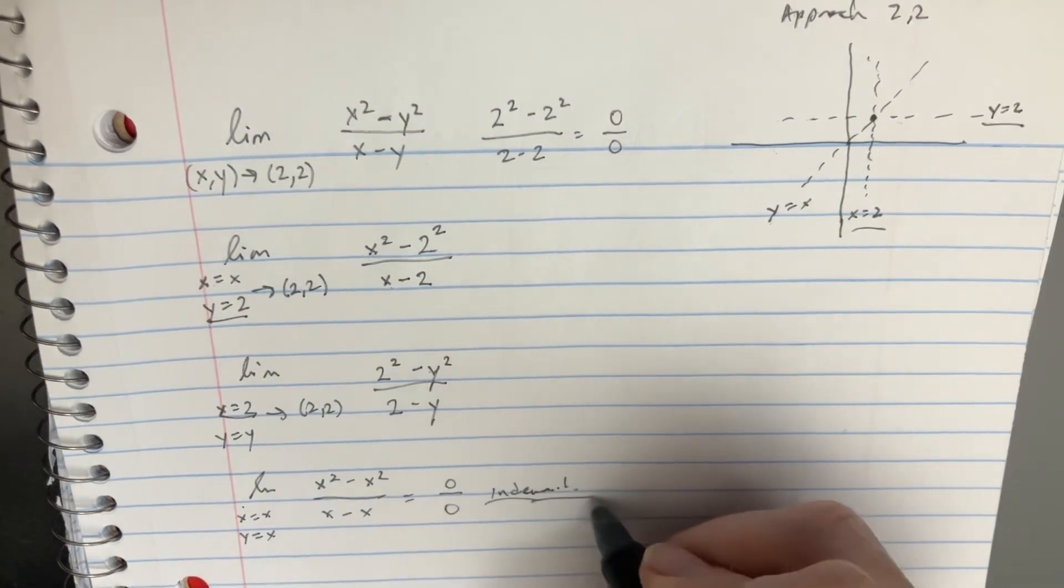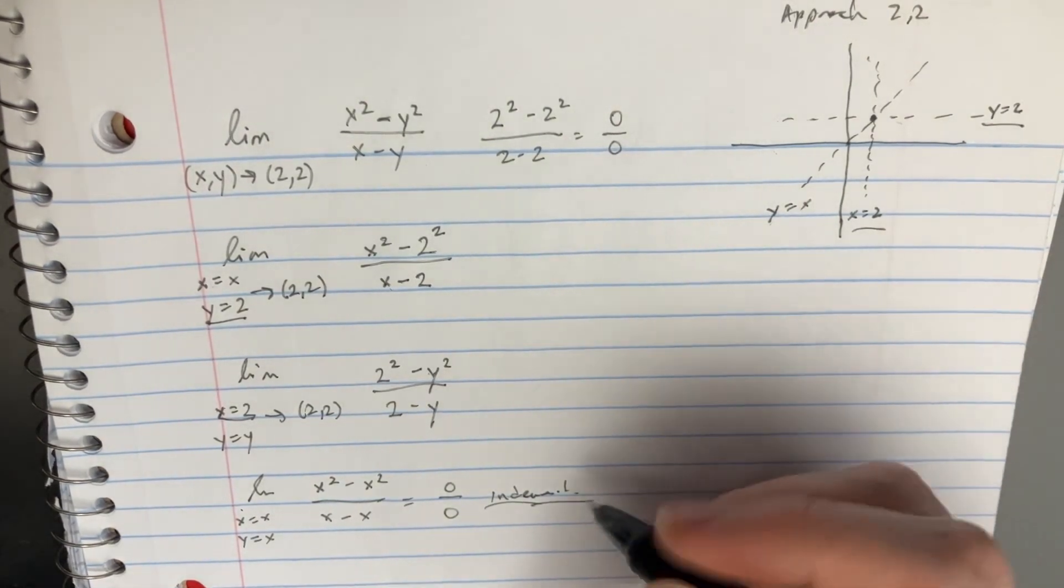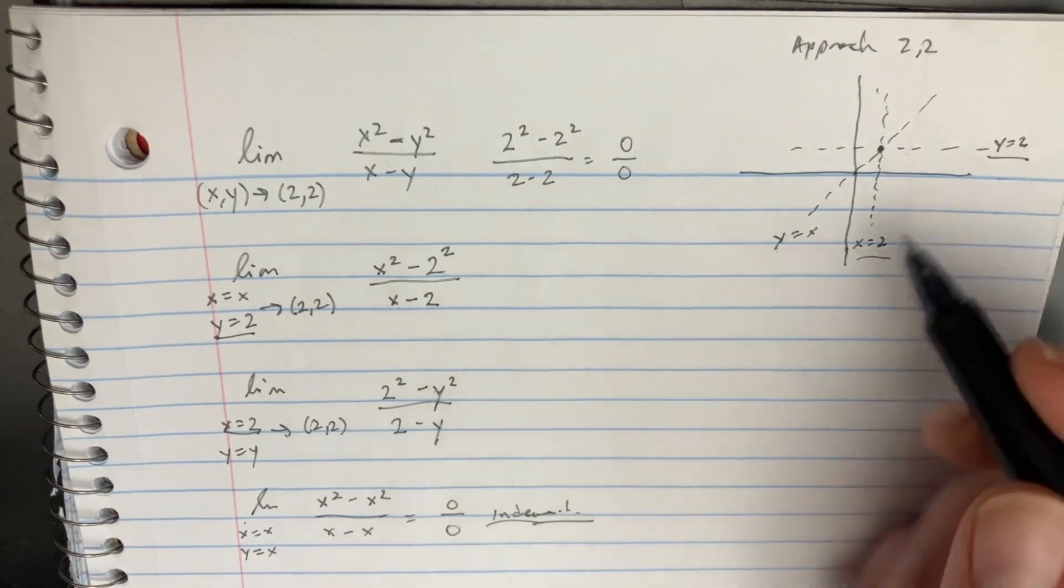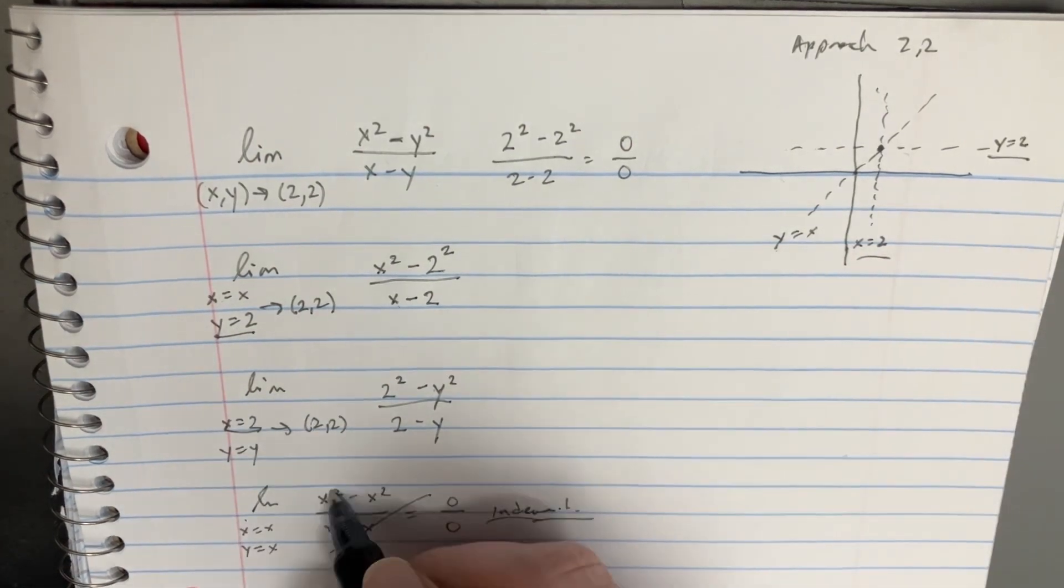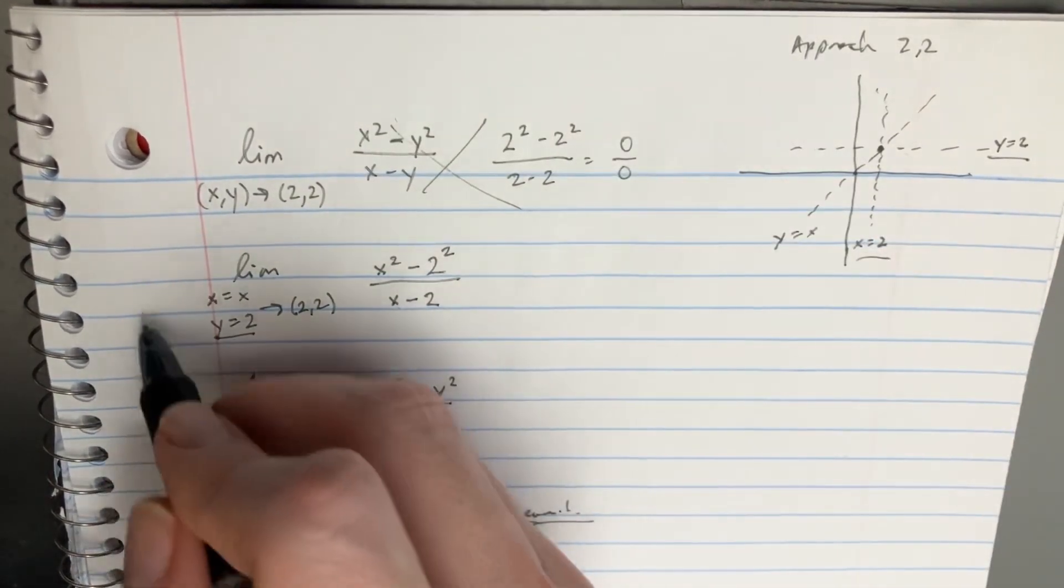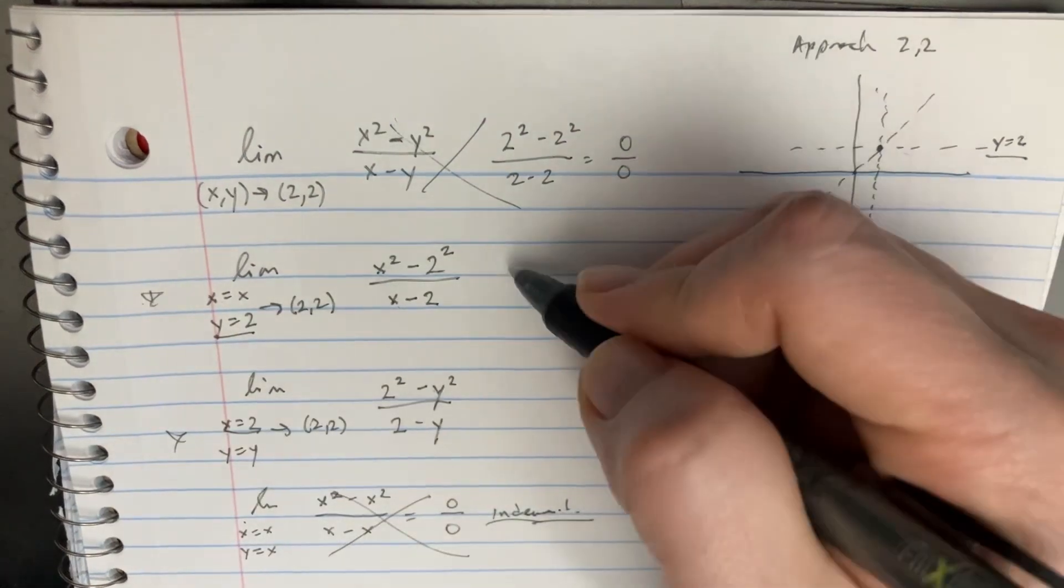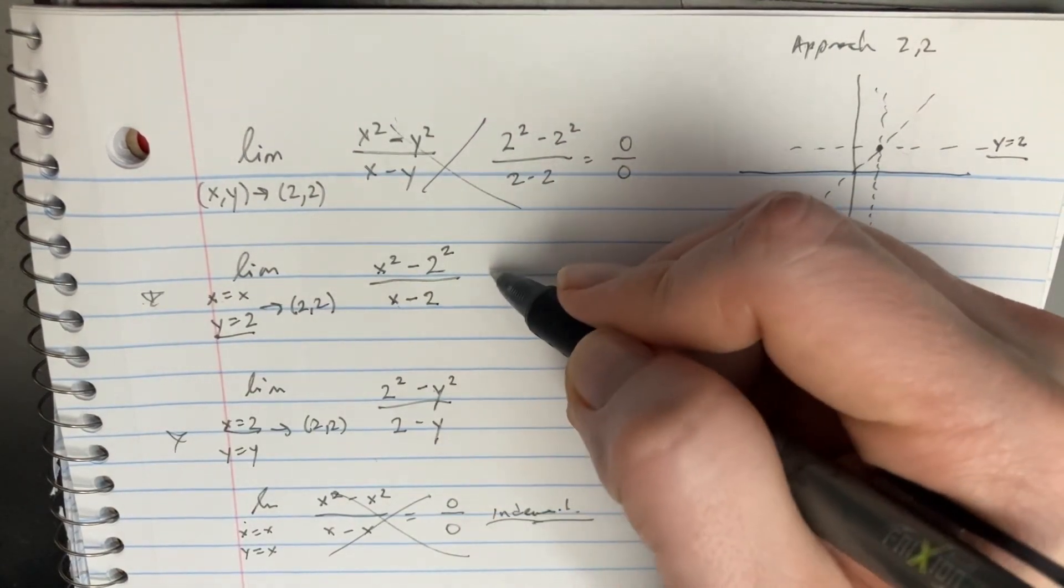The indeterminate is indeterminate. That means we can't really determine anything from that. So we have to do other limits to see what happens. These are the only two that we can try to work with now.